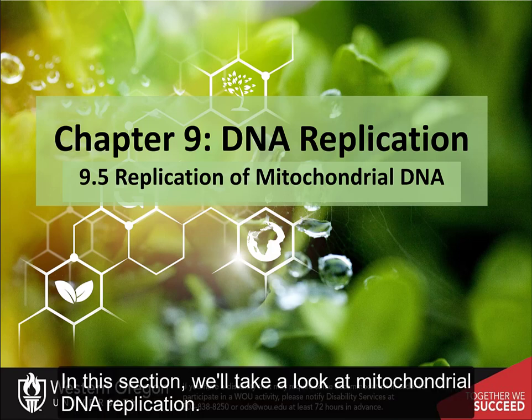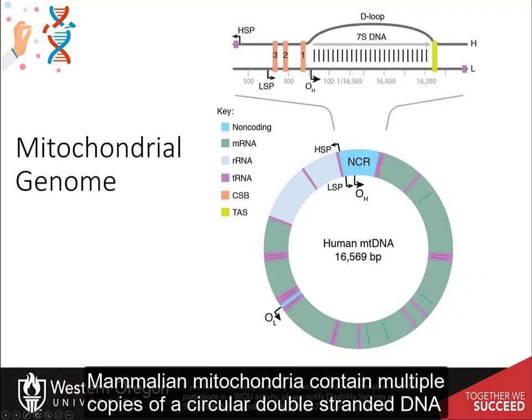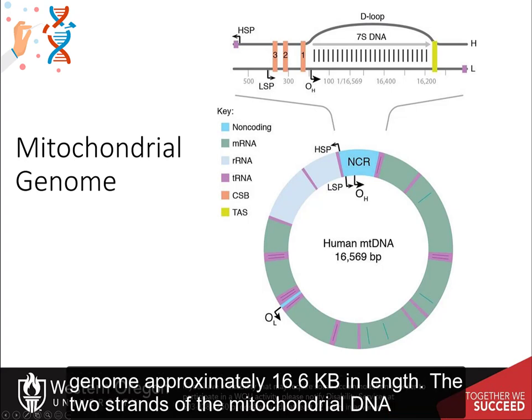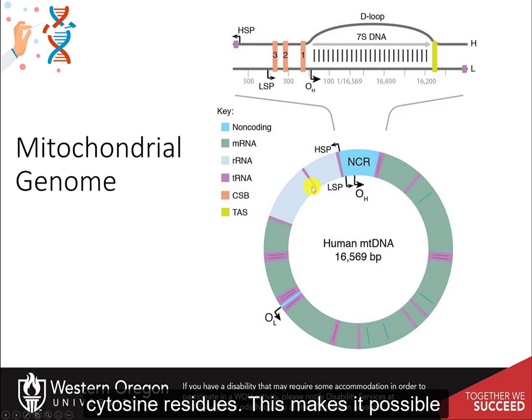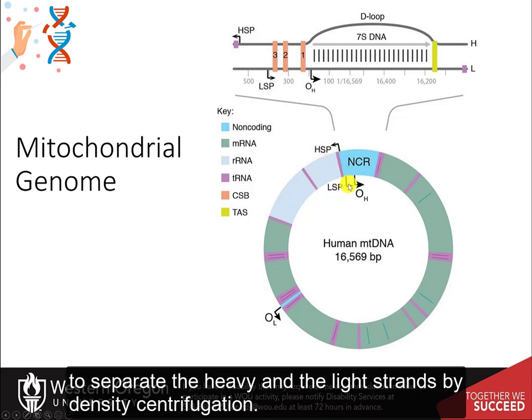In this section, we'll take a look at mitochondrial DNA replication. Mammalian mitochondria contain multiple copies of a circular, double-stranded DNA genome, approximately 16.6 kb in length. The two strands of the mitochondrial DNA differ in their base composition, with one being rich in guanine residues and the other in cytosine residues. This makes it possible to separate a heavy and a light strand by density centrifugation.